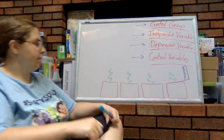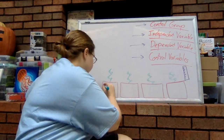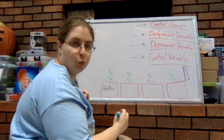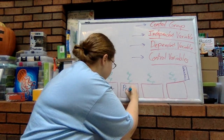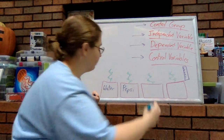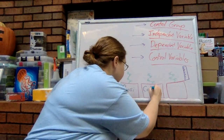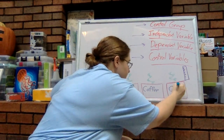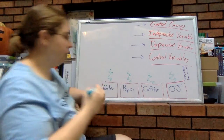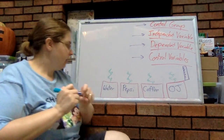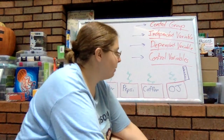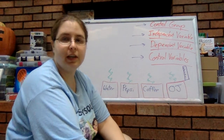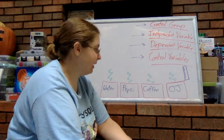So let's set this up. I have four plants. I'm going to give one of them water, one of them Pepsi, one of them coffee, and one of them orange juice. Now based on this, maybe my hypothesis is that the plant with the orange juice is going to grow the best. That's my hypothesis.